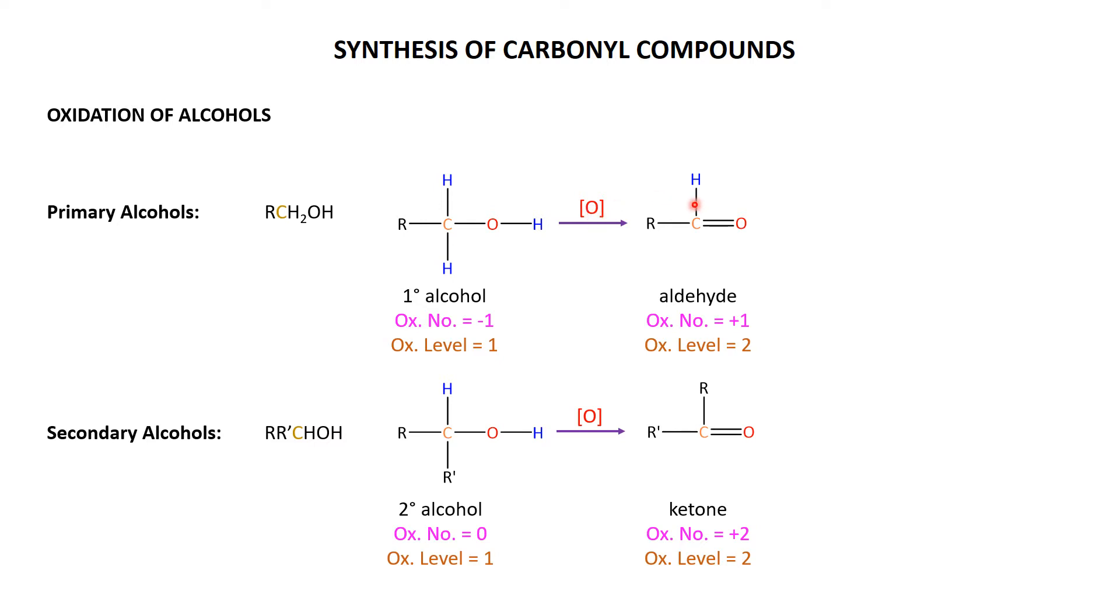You first make an aldehyde. It's oxidized because the oxidation number goes from minus one to plus one. The oxidation level, which is completely separate from the oxidation number but just another way to follow oxidations, goes from one to two. Because in the alcohol we have a carbon bonded to one hetero atom, and in the aldehyde we can think of the carbon as bonded to hetero atoms or with a double bond to a hetero atom.